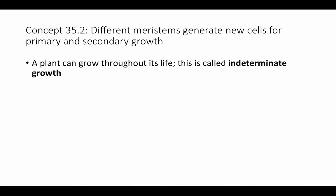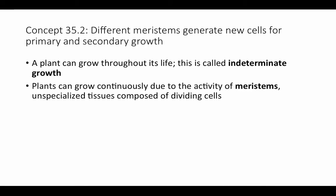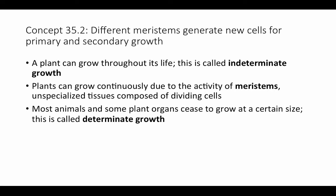Plants can grow continuously due to the activity of meristems, which are unspecialized tissues composed of dividing cells — equivalent to embryonic stem cells, the undifferentiated cells seen during animal development. Most animals and some plant organs cease to grow when they reach a certain size; this is called determinate growth. Some fish and other vertebrates can continue growing throughout their lives, but most animals reach a particular size and stop.